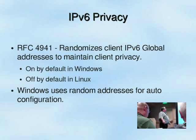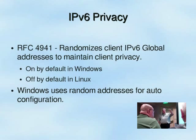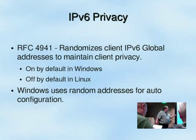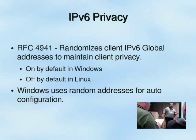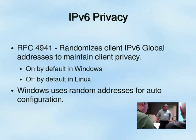IPv6 has privacy features. RFC 4941 defines the ability to randomize client IP addresses so you can have multiple public IPs on an interface and rotate through them when connecting on the internet, making it harder to trace back to a specific machine. This is on by default in Windows and off by default in Linux. Ironically, Windows also uses random addresses for auto-configuration rather than EUI-64 — and I have to admit that's actually a pretty good idea.